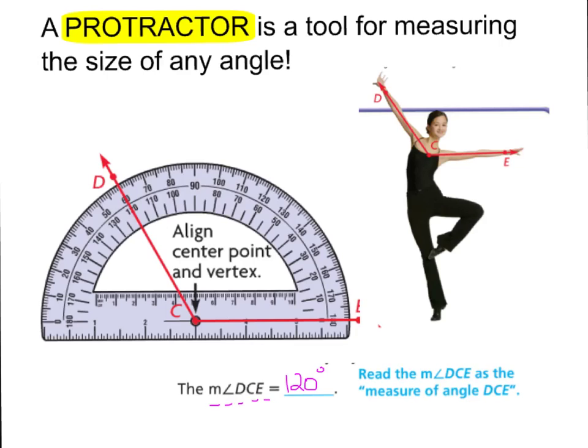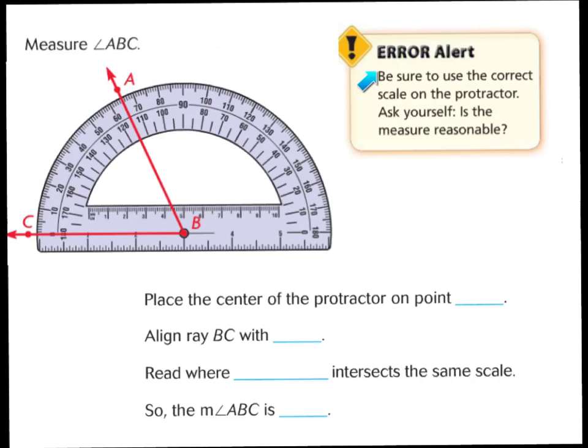Let's try some more. Now do you see this error alert right here? Let's read that. It says be sure to use the correct scale on the protractor. Ask yourself, is the measure reasonable? In other words, if I were to look at this angle ABC and I would look at my protractor and I see that it's between 110, 120, so I guess 115 degrees, well is that reasonable? No it's not because I know it has to be less than 90 degrees because I know it's an acute angle.